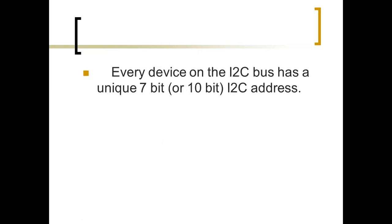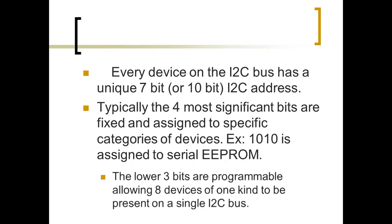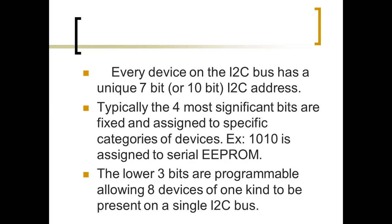Every device on the I²C bus has a unique 7-bit address. Typically the 4 most significant bits are fixed and assigned to specific categories of devices — for example, 1010 is assigned to serial EEPROM. The lower 3 bits are programmable, allowing up to 8 devices of one kind to be present on a single I²C bus.